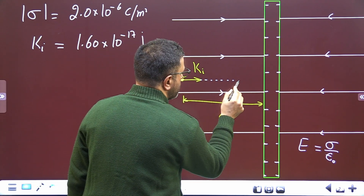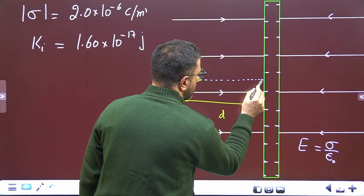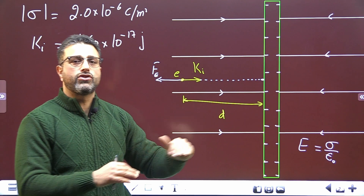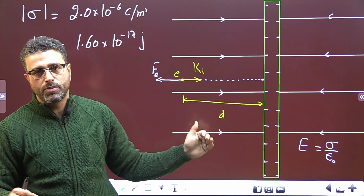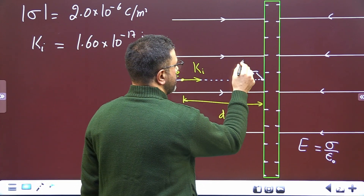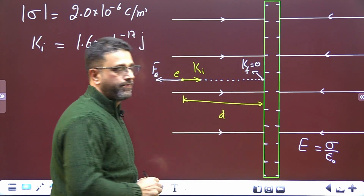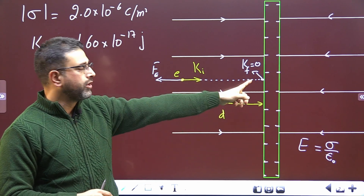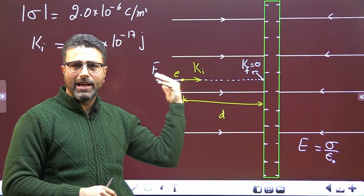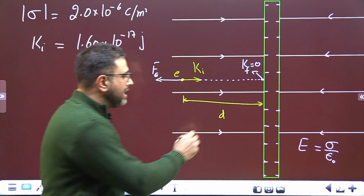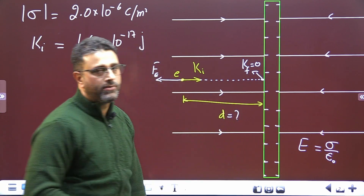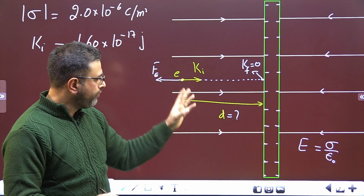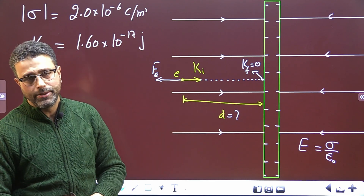We are told the electron stops just as it is about to hit the plate — its velocity becomes zero, meaning its final kinetic energy is zero. The electron travels through distance D before coming to rest, and after that it would return, but we are not concerned with that. This distance D is what we have to find.